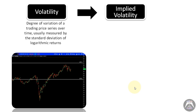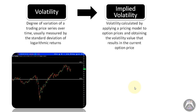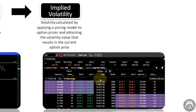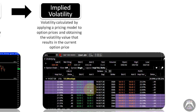What is implied volatility? Implied volatility is the volatility that's calculated by applying a pricing model to option prices and obtaining the volatility value that results in the current option price. So if we have a certain underlying and the options that make up its option chain — puts, calls, different strike prices, different expirations — every option price, if we apply a pricing model, gives us a value of implied volatility that makes it the premium for that particular strike, expiration, and type.